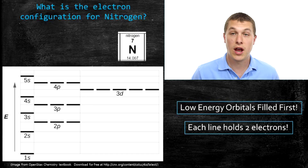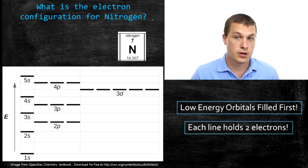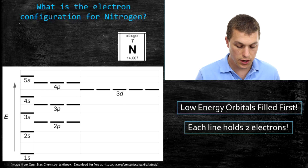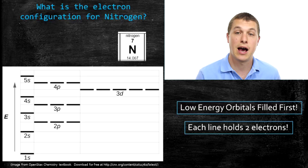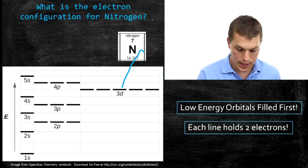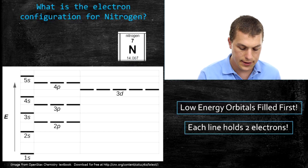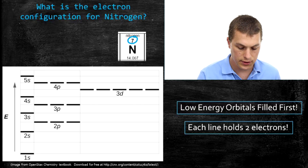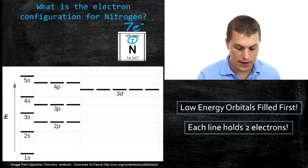Let's say we want to look at nitrogen and want to know where the electrons go. What orbitals do they sit in? The first thing you want to ask yourself is how many electrons does nitrogen have? When you look at nitrogen on the periodic table, it has 7 electrons. So we need to put a total of 7 electrons into these orbitals.